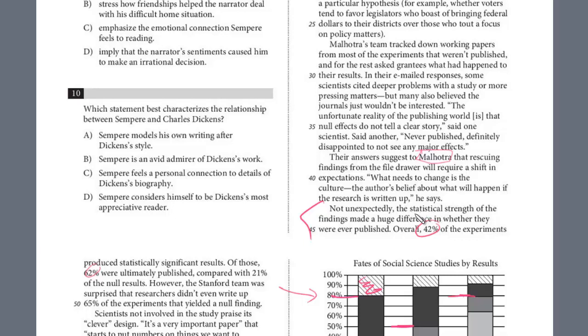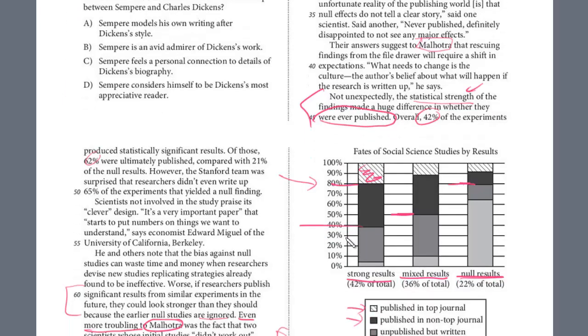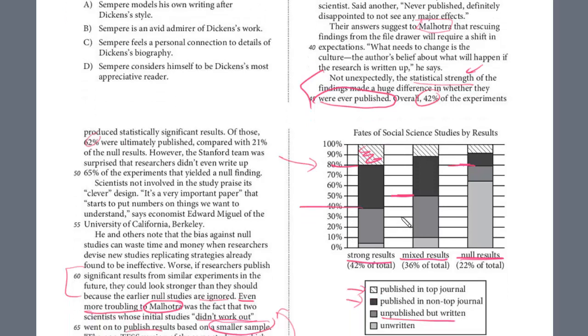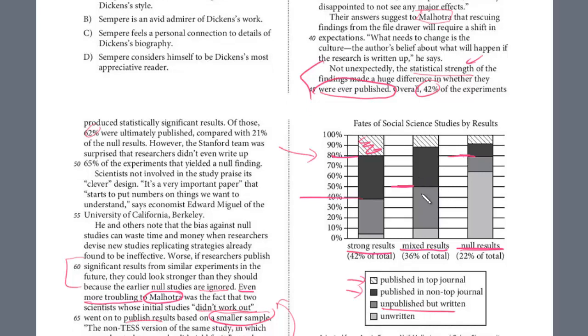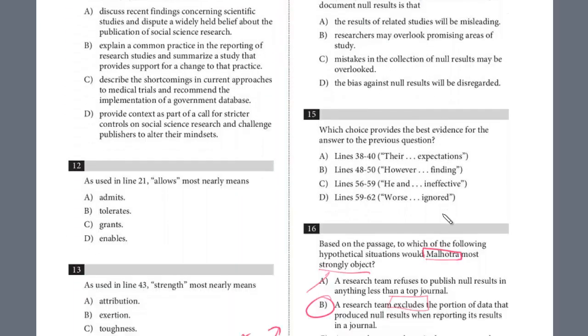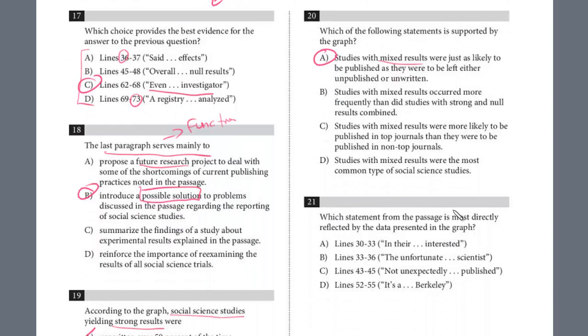So this is definitely what the table shows. How strong the results are makes a big difference whether the findings were published. And so the answer looks like would be for 21. It is C.